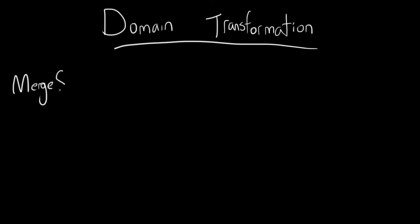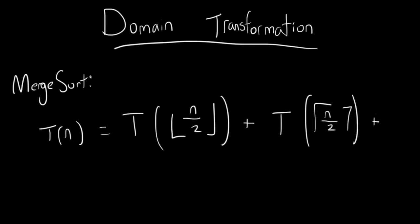What was the runtime for the merge sort algorithm? So we had T(n), and this is going to be T(floor of n over 2) plus T(ceiling of n over 2) plus that constant cn. So we had the floor and the ceiling. Let's go ahead and mark that up over here. Floor and the ceiling.